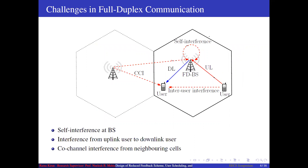However, the spectral efficiency gain comes with new challenges. First is self-interference at the base station, due to proximity of the uplink transmitting antenna and uplink receiving antenna. Second is interference between uplink users and downlink users due to simultaneous transmission. Third is co-channel interference from neighboring cells.